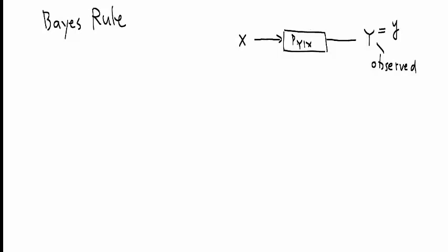So that's the conditional distribution of y given x. Depending on different values of x, what the distributions of y should be.